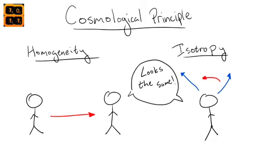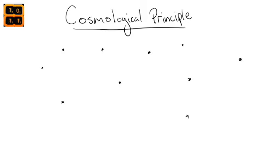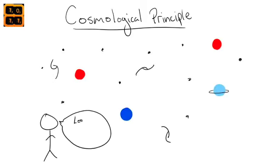Now, I know what you're thinking. This can't be true since we see different stars, planets, and galaxies all around us. The caveat to the cosmological principle is that it is only expected to be true above some very large length scale.